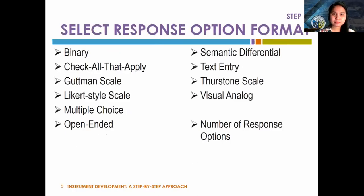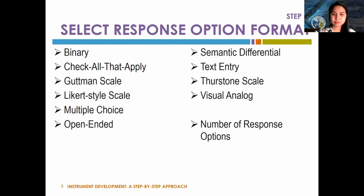The third step — selecting the format of response options — is closely related to writing items. There are a variety of response option formats for both self-report and interviewer-administered items. The most important characteristic distinguishing these options is the type of information they yield: whether the response data are nominal, ordinal, interval, or ratio. Ultimately, it is the researcher's goal to ask questions in a way that yields the data needed to answer research questions consistent with the instrument's purposes.